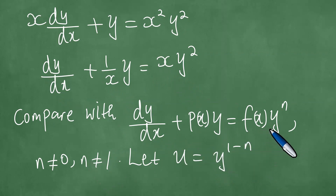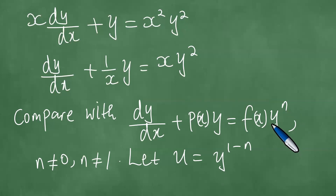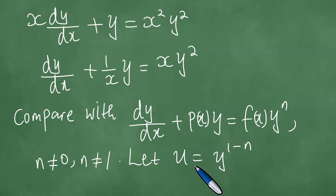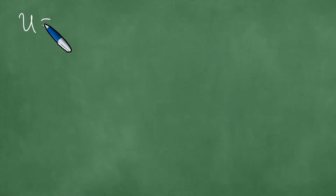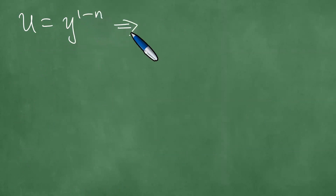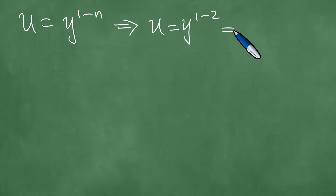By comparison, in the Bernoulli equation there is y to the power n, and here we have y squared, so n equals 2. This means u equals y to the power 1 minus n, which gives u equals y to the power 1 minus 2.